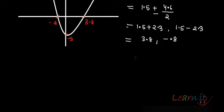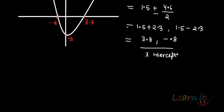So these are the x-intercepts. The y-intercept will be -3 when you put x = 0.